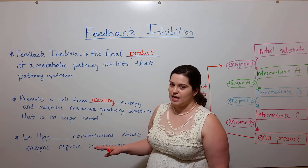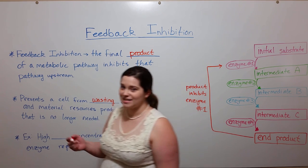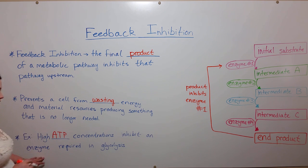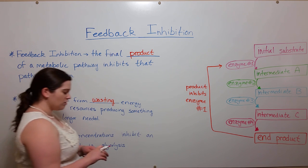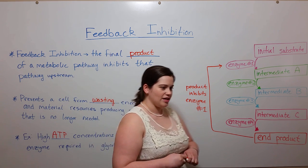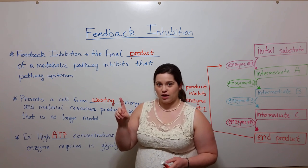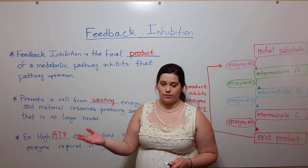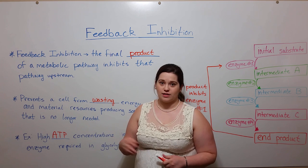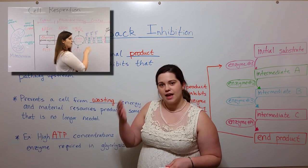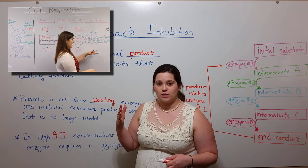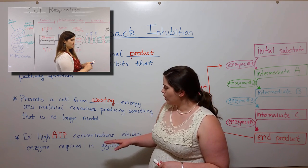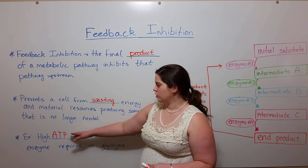An example of this is when high ATP concentrations inhibit an enzyme required in glycolysis. Remember that in cellular respiration there are three main steps: glycolysis, the Krebs cycle, and the electron transport chain, which is what powers oxidative phosphorylation with ATP synthase. If you want to refresh yourself on some of those details, please see my video on cellular respiration. Basically, those different stages all produce some ATP.